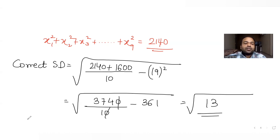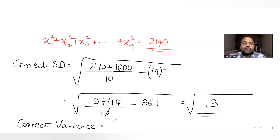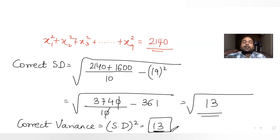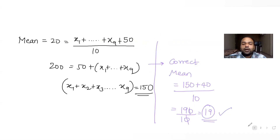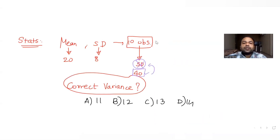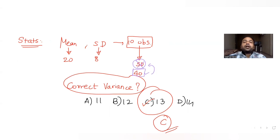Since we need the correct variance, that is simply the square of the standard deviation: (√13)² = 13. The correct variance is 13, which matches option C. So option C is the correct answer for this question.